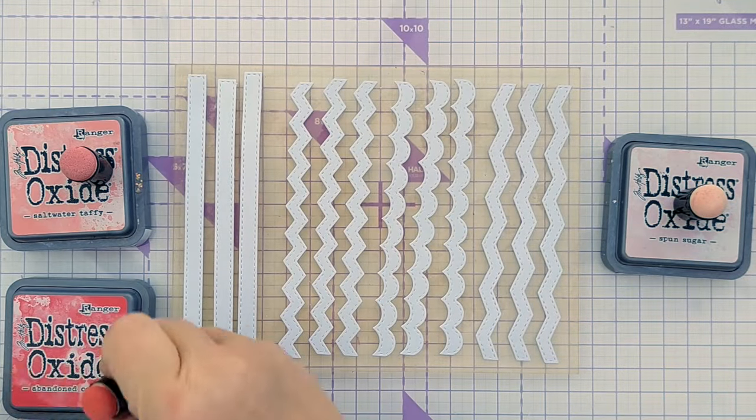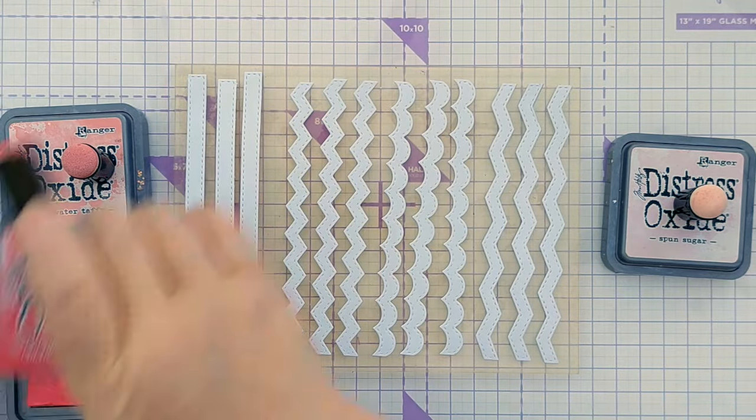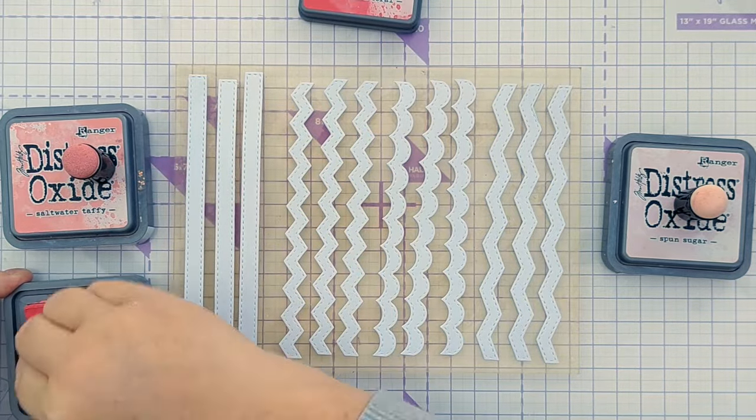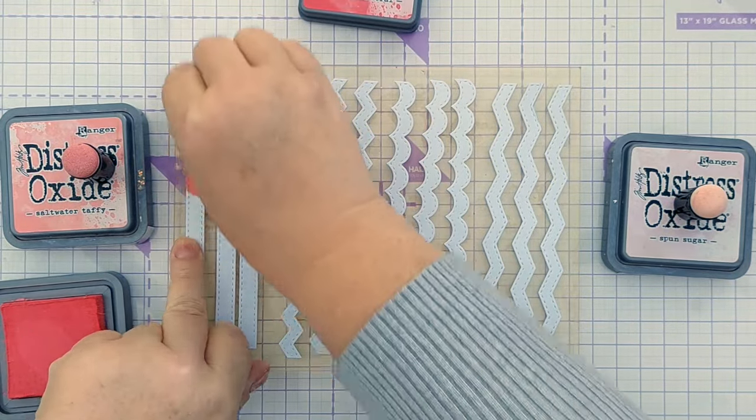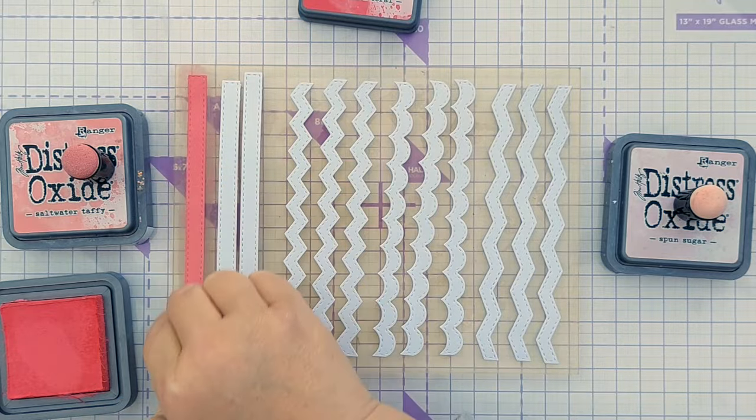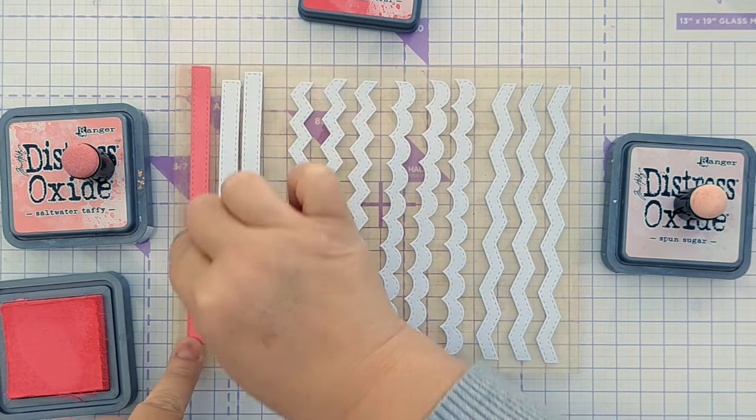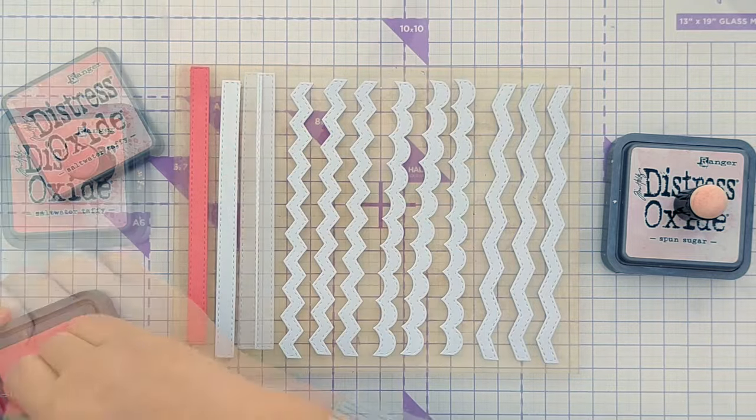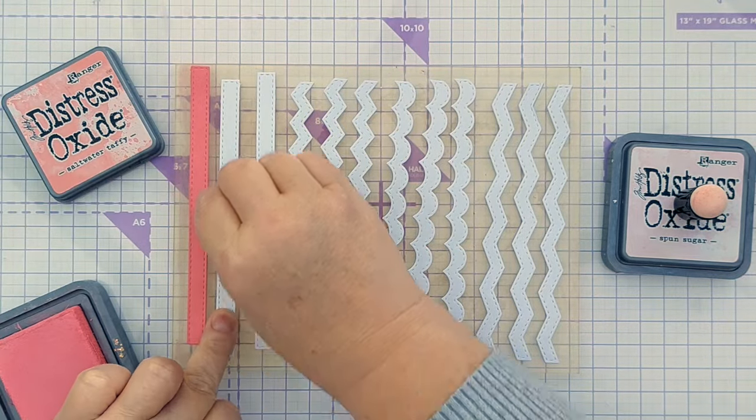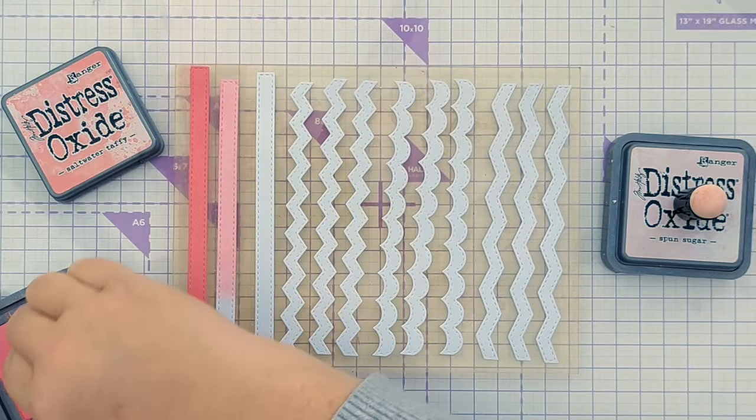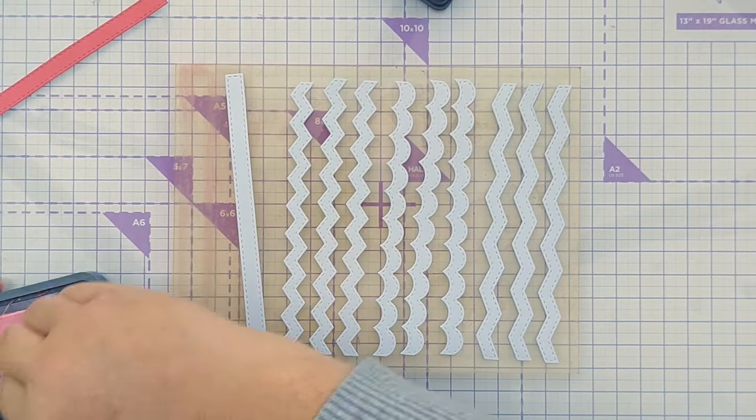So my bits are cut now and I'm going to use my finger daubers to add my distress oxides onto my strips. This one is Abandoned Coral, this next one is Saltwater Taffy, this one is Spun Sugar.